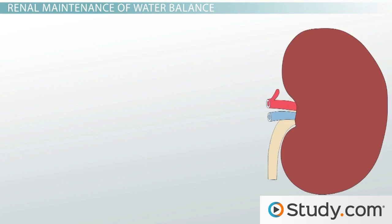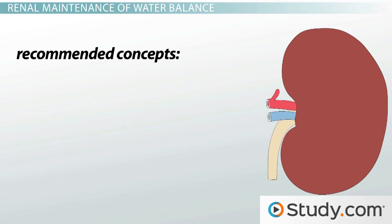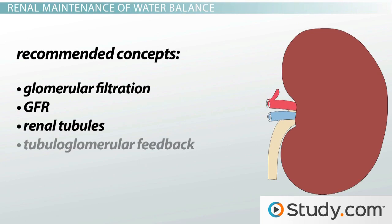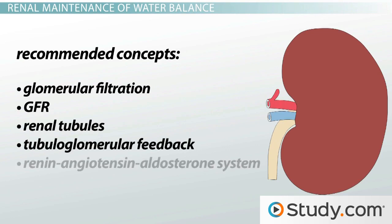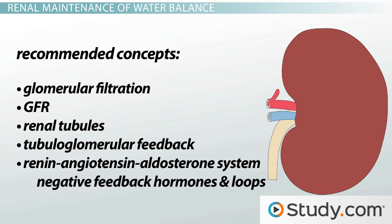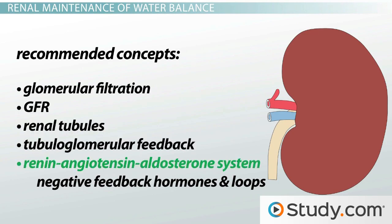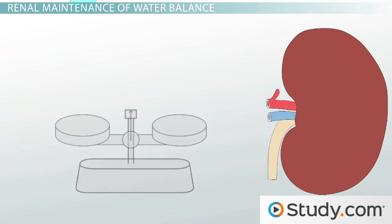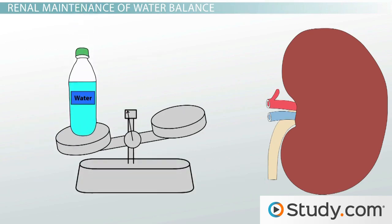Before proceeding to the information in this lesson, I highly recommend that you be familiar with the following concepts: glomerular filtration, GFR, renal tubules, tubuloglomerular feedback, the renin-angiotensin-aldosterone system, and its negative feedback hormones and loops. We have lessons on each of these topics, and it's important that you understand them before moving on to one of the most important big picture roles that your kidneys are involved in.